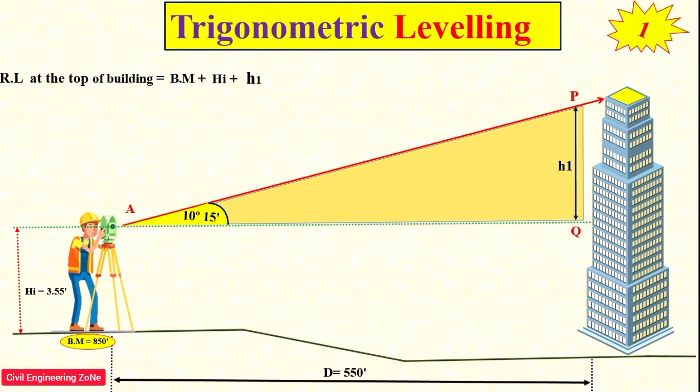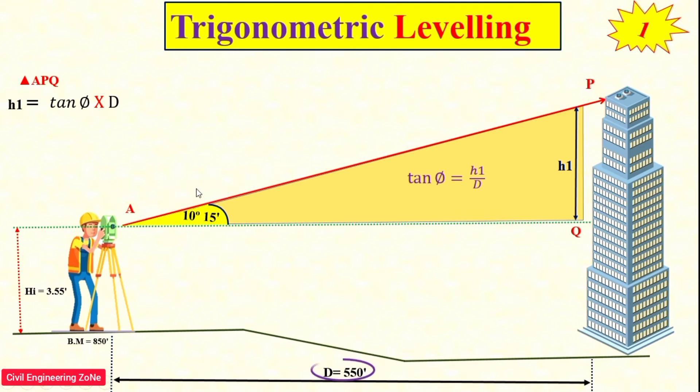First, calculate the value of h1. Taking triangle FEQ, we can calculate the value of h1 using tangent theta, which is perpendicular divided by base. In this case, our perpendicular is h1 and D is 550 feet. So h1 equals tangent theta times D. Tangent of 10 degrees 15 minutes times 550 feet gives us h1 equals 99.45 feet.